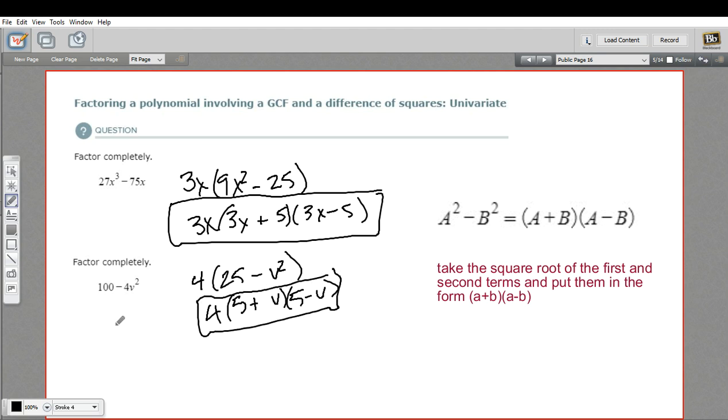Now, if you had approached this the other way, thought of this as a difference of squares first, the square roots would be 10 and 2V. So you'd have 10 plus 2V times 10 minus 2V. But it's not completely factored or not in the simplest form. Because each one of these parentheses, you could take a 2 out.